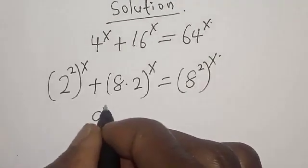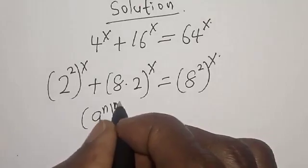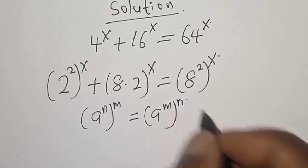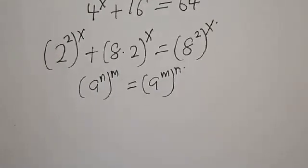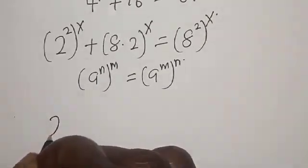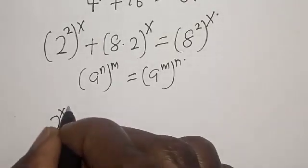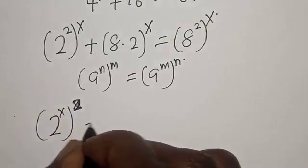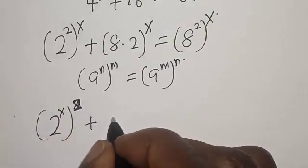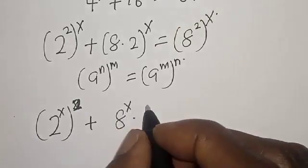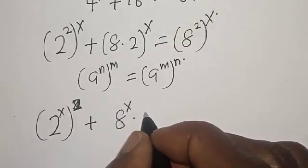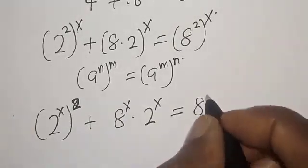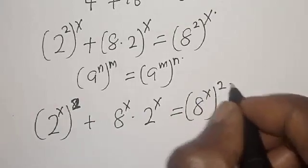Note that a raised to power n, raised to power m, is equal to a raised to power m raised to power n. Now, 2 raised to power s, all squared, plus 8 raised to power s, is equal to 8 raised to power s, all squared.